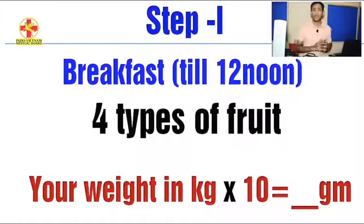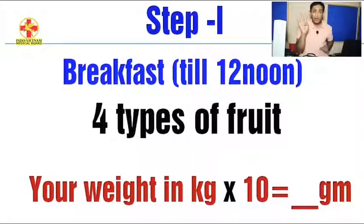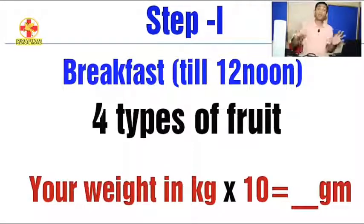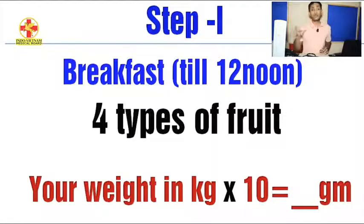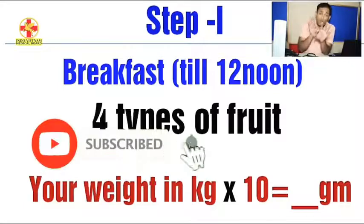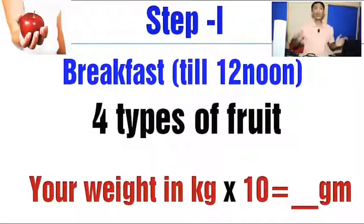Step 1. For the first 12 hours, whatever you want to eat is only fruit — fruits and fruits. If you want to eat 3 to 4 types of fruit, it depends on your body weight. Let's say my body weight is 70 kg multiplied by 10, that is 700 grams or more of 4 kinds of fruits. For the 12-hour window, you have to eat just fruit, fully.